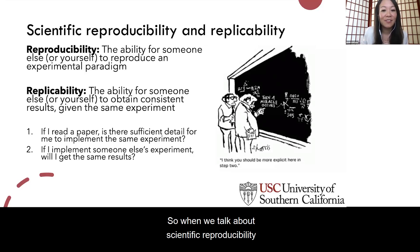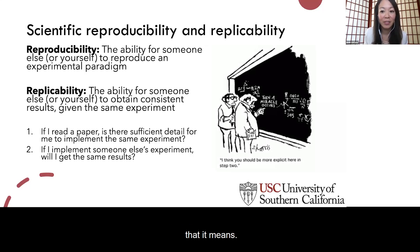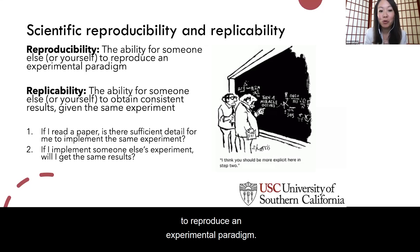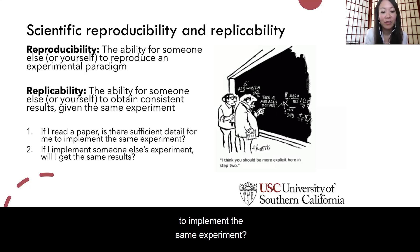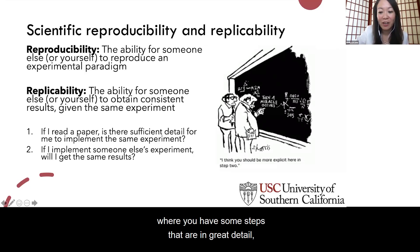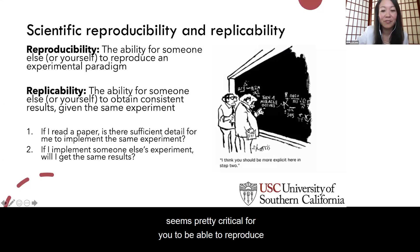When we talk about scientific reproducibility and replicability, there are a few different things that it means. Reproducibility specifically refers to the ability for someone, or even yourself, to reproduce an experimental paradigm. That means if you read a paper, is there sufficient detail in that paper for you to implement the same experiment? Or is it more like the cartoon on the right here, where you have some steps in great detail and then a missing step that seems pretty critical for you to reproduce the same experiment?